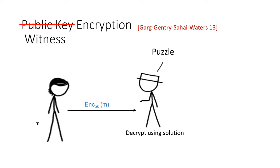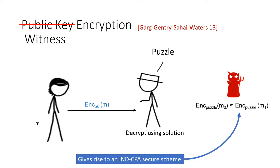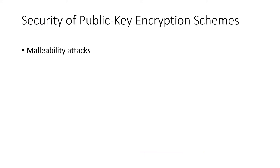Moreover, assuming the existence of an appropriate witness encryption scheme, any adversary that cannot find an NP witness will not be able to distinguish between encryptions of two different messages. To motivate our problem statement, let's take a deeper look at the security of public key encryption schemes.